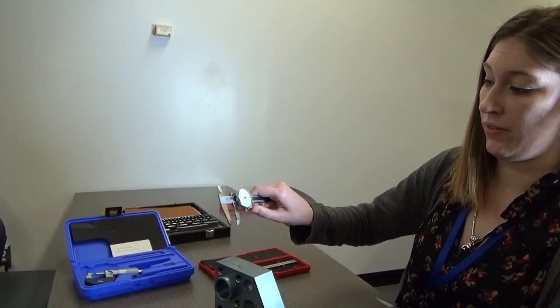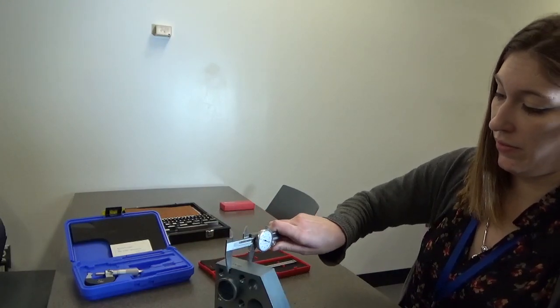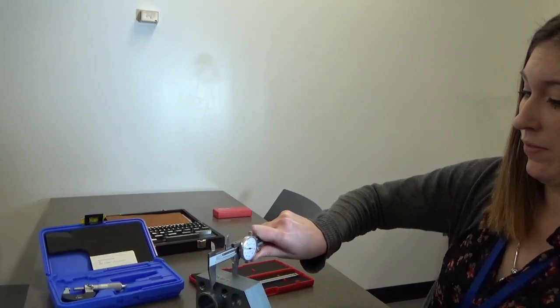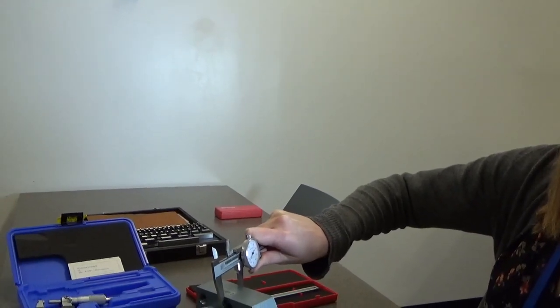Okay, so we're going to move right along to how to make the proper measurement here. So the caliper needs to be level to your work surface. It also needs to be straight across. So she's showing a couple of incorrect positions there.